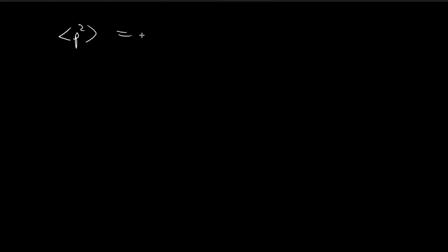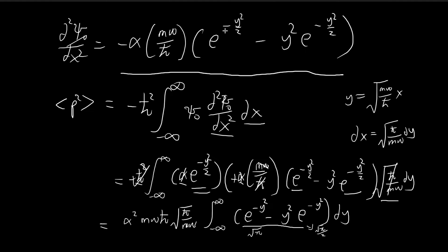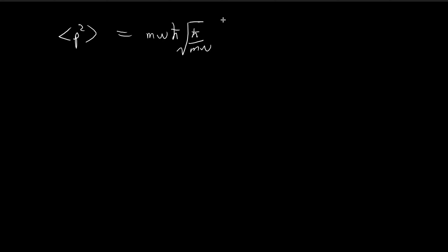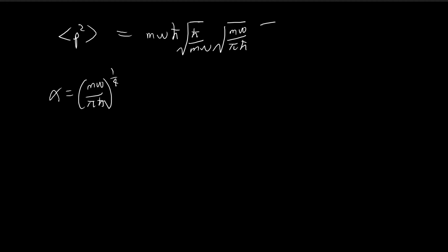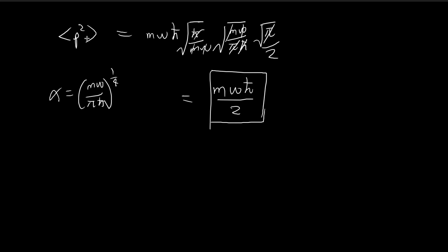So the expected value of momentum squared simplifies as follows. We have m omega h-bar times the square root of h-bar divided by m omega. Alpha-squared equals the square root of m omega divided by pi h-bar. And the integral part gives square root of pi minus square root of pi over 2, which is square root of pi over 2. After cancelling the square root of pi, h-bar, and m omega, we are left with m omega h-bar divided by 2. And this is the expected value of momentum squared.